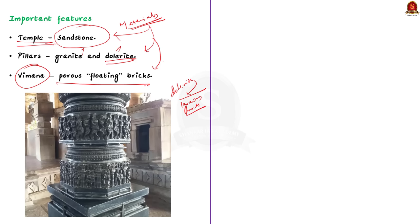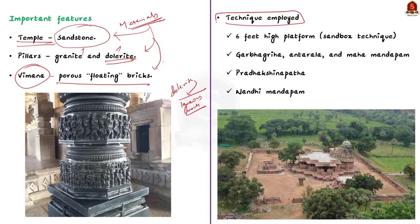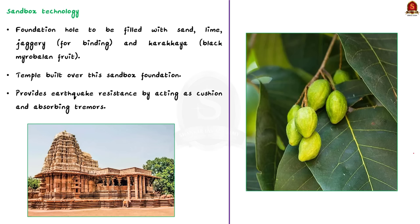The temple is built on a 6-feet-high platform using the sandbox technique. The temple has structures like Garbhagraha, Antarala and Mahamandapa, and is surrounded by Pradakshinapatha. At the entrance there is Nandimandapa, and the main temple is surrounded by a wall. In the sandbox technique, a hole is dug for laying the foundations, which is then filled with a mixture of sand, lime and jaggery used for binding materials. Often, Karakaya — a black myrobalan fruit — is also added. This sandbox acts as the foundation of the temple.